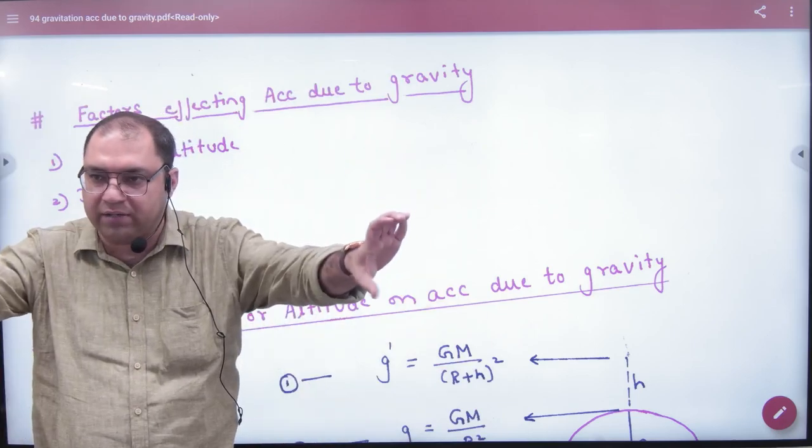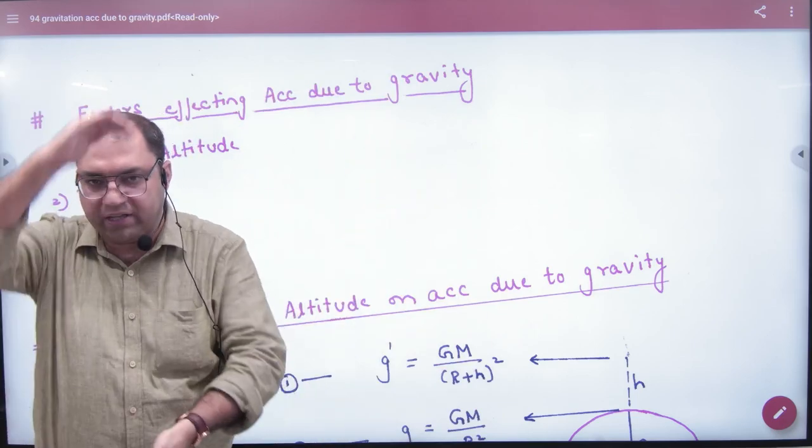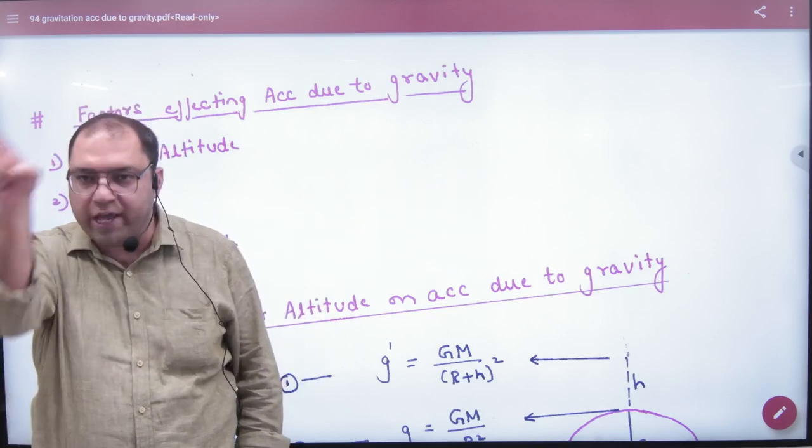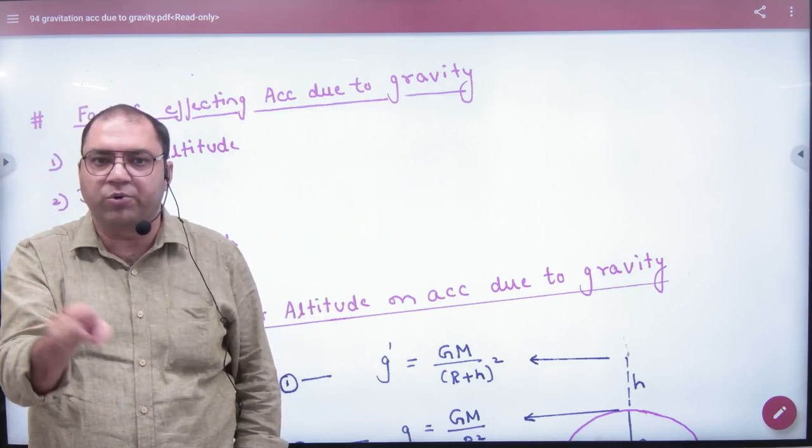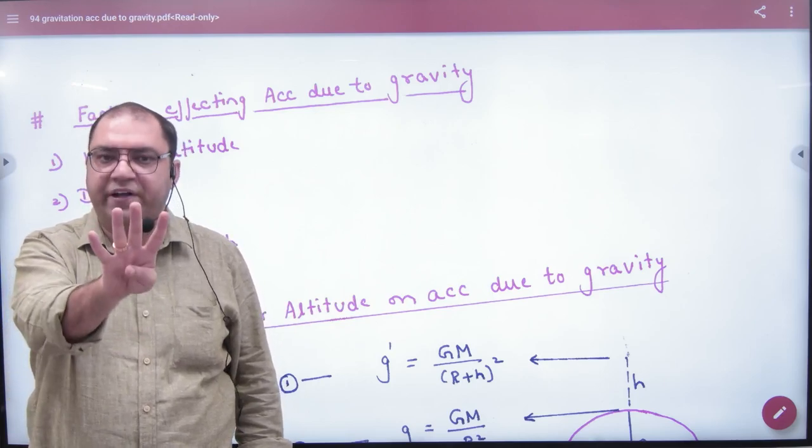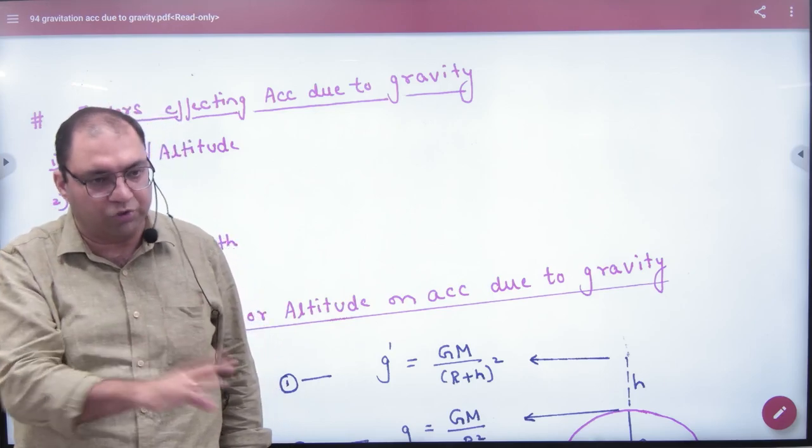It will increase the radius and the pole of the radius is less. The height is less. So due to this shape, the acceleration due to gravity will change. We will study these four factors. This chapter will close with us.